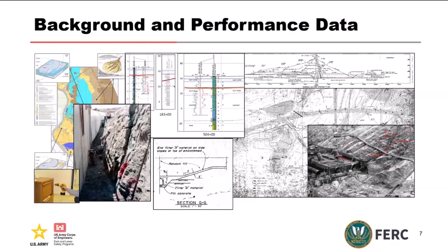The key takeaway is that all the information we can pull together to better understand the structure will ultimately make the risk assessment stronger. It's really important that the whole team thoroughly reviews all the available design documentation, as-built and construction records, photographs, and previous studies, so that everybody comes in with common knowledge. To recap: your background data will include design, construction, geology, and geometry, while your performance data will include operations, instrumentation, monitoring, and performance history — including the frequency of high pool events and observations.